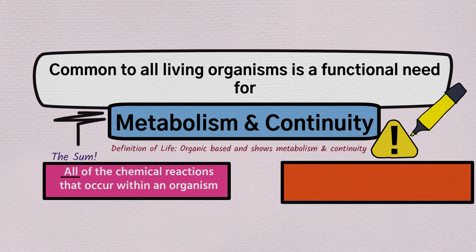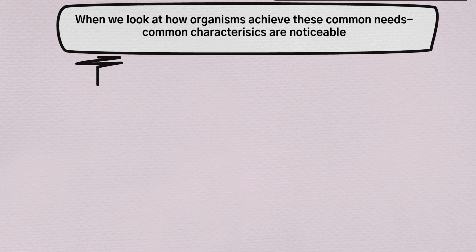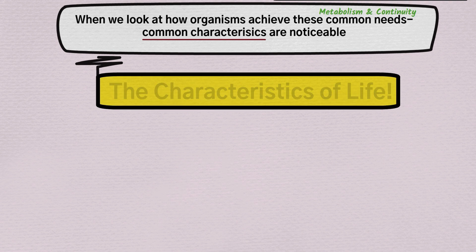What is meant by continuity? Define continuity: living things arise from other living things of the same type. Cell continuity specifically means that all cells arise from other existing similar cells. How organisms achieve metabolism and continuity leads us to some common characteristics — these are the characteristics of life.